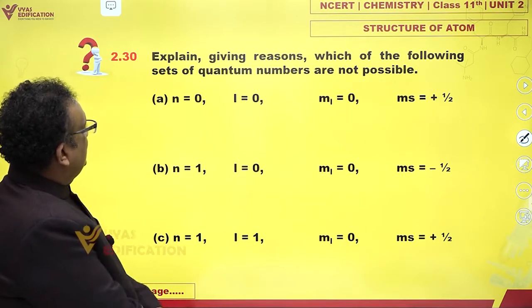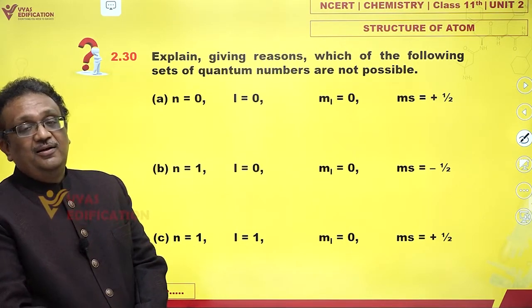Explain, giving reasons, which of the following sets of quantum numbers are not possible.